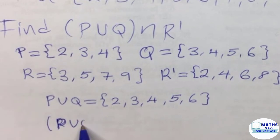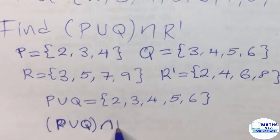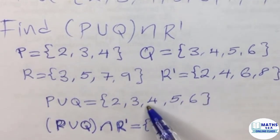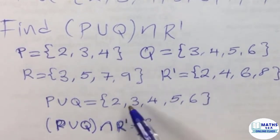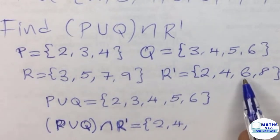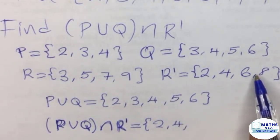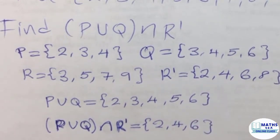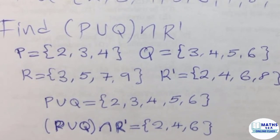P union Q intersection R prime. So the intersection of R prime and the union. We have 2, 2 is common. We have 4. 5 is not common, but we can see that 6 is common to both sides. So 6. So that completes the elements in P union Q intersection R prime.